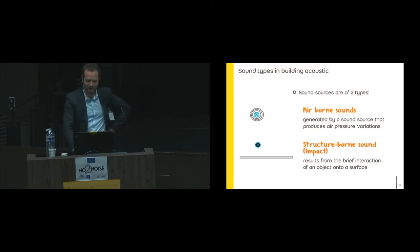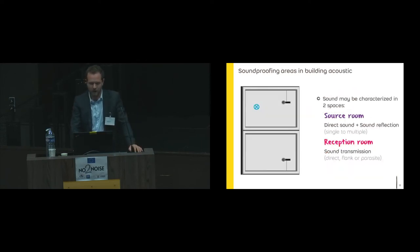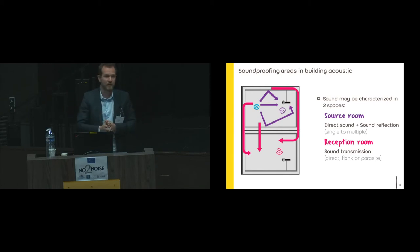You have airborne sound and structure-borne sound. These two source types are really important in buildings—really different. We don't use the same techniques to deal with them, to model them, and so on. Two sources, but when you deal with soundproofing in buildings, you always have the source room and a reception room. In the source room you have the direct sound plus the sound reflections. In the reception room you have the sound transmission, which can be transmitted by the direct path—generally the wall or ceilings—but also by the flanking path, which can be the side walls, the ceiling, or the floor. This flanking transmission is not so much taken into account by the industry when we sell solutions, but much more by regulations and architects because you have mandatory installation performance to achieve in situ, taking into account the flanking transmissions.